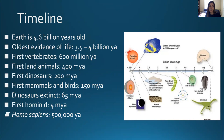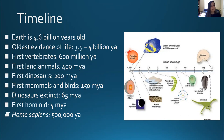We'll start with a timeline of life on earth to orient ourselves and see where vertebrates fit in. The earth is 4.6 billion years old, and the oldest evidence of life dates back to about three and a half to four billion years ago. The first vertebrates didn't appear until 600 million years ago, first land animals were 400 million years ago, and first dinosaurs were 200 million years ago — so vertebrates occupy really just the most recent part of earth's history.